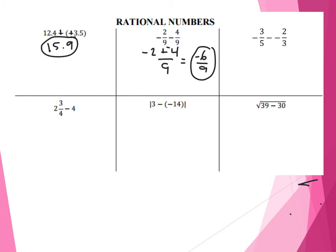Next one, we have negative 3 over 5 minus negative 2 over 3. First thing you might want to do is change the subtraction sign to addition, so if I change it to addition I'm going to change the sign of 2 thirds to a positive. But here I have two fractions with different denominators, so I want a common denominator. The common denominator of 5 and 3 should be 15. I went from 5 to 15 — the factor is 3 — so I'm going to apply the negative up top: negative 3 times 3 gives me negative 9. I'm going to add to that and change the denominator to 15 as well — from 3 to 15 I multiply by 5, so I take positive 2 times 5 to give me 10. So I have negative 9 over 15 plus 10 over 15. Negative 9 plus 10 gives me 1 over 15.